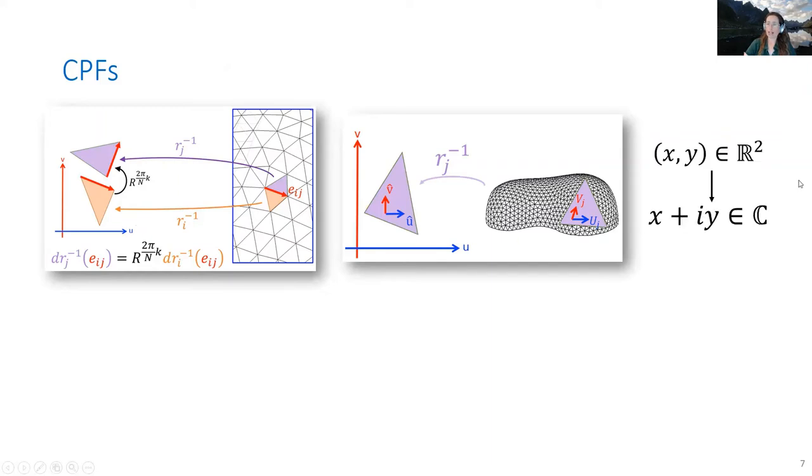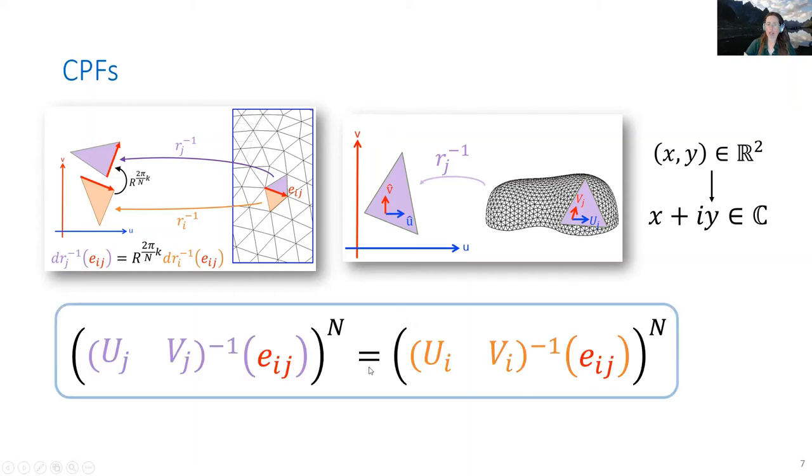Combining this with the complex representation for planar vectors, we get a very simple equality constraint which we impose for all the interior edges of the mesh.